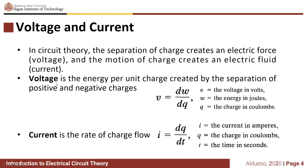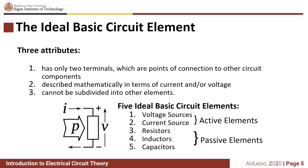Voltage is the energy per unit charge created by the separation of positive and negative charges, given by the equation V = dW/dQ, where V is the voltage in volts, W is the energy in joules, and Q is the charge in coulombs. Current is the rate of charge flow, given by I = dQ/dT, where I is the current in amperes, Q is the charge in coulombs, and T is the time in seconds.